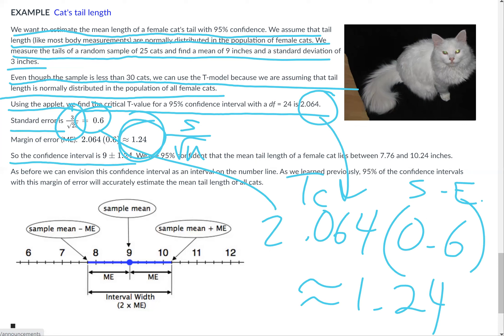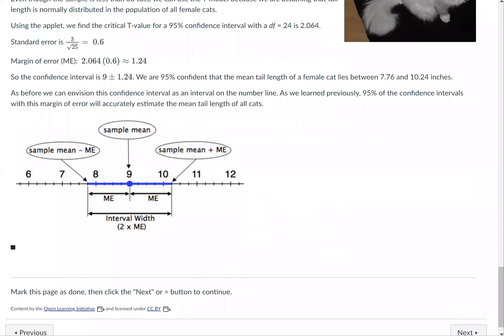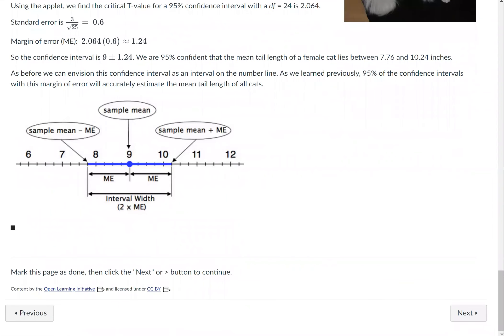The confidence interval is 9 plus or minus 1.24. We are 95% confident that the mean tail length of a female cat lies between 9 minus 1.24, which is 7.76, and 9 plus 1.24, which is 10.24. So between those two numbers, we are 95% confident that the mean tail length of a female cat lies.